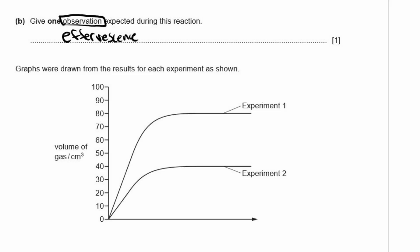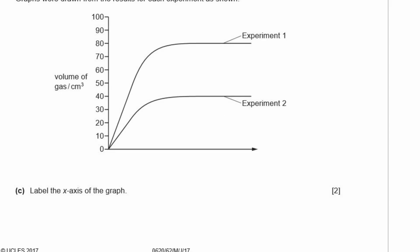Okay, so graphs were drawn from the results of each experiment as shown. Alright, so we have experiment one, experiment two, and the volume of gas on the y-axis. C. Label the x-axis of the graph. Alright, so this is the volume of gas being collected over a certain amount of time. So the x-axis is time in seconds, and that's it.